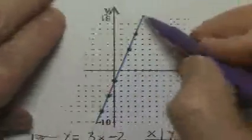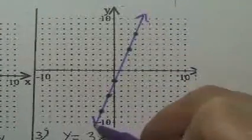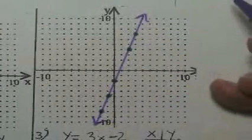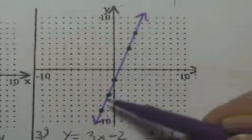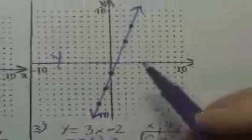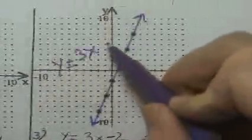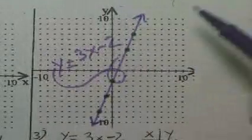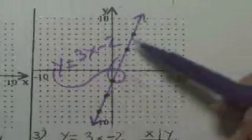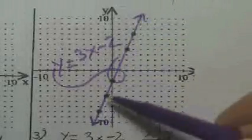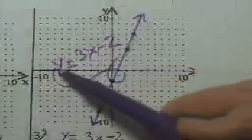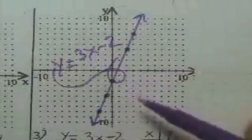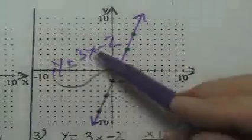Draw a line all the way through the points from one end to the other, all the way through the entire graph. And there's your line. That equation is y equals 3x minus 2. These are all the solutions that will work — all the answers that will work for this equation, so the left side equals the right side. They make the equation true.